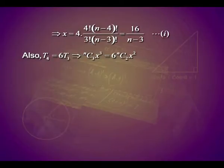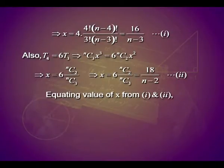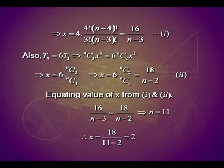Similarly, using the second condition — the fourth term is 6 times the third term — and replacing each term by n C 3 times x cubed and n C 2 times x squared, x again simplifies and you get a condition: x must equal 18 divided by (n minus 2). So we have two expressions for x but they represent the same x. Equating them: 16 divided by (n minus 3) equals 18 divided by (n minus 2), giving n equals 11. Once n is known as 11, use either equation and you get x equals 2.